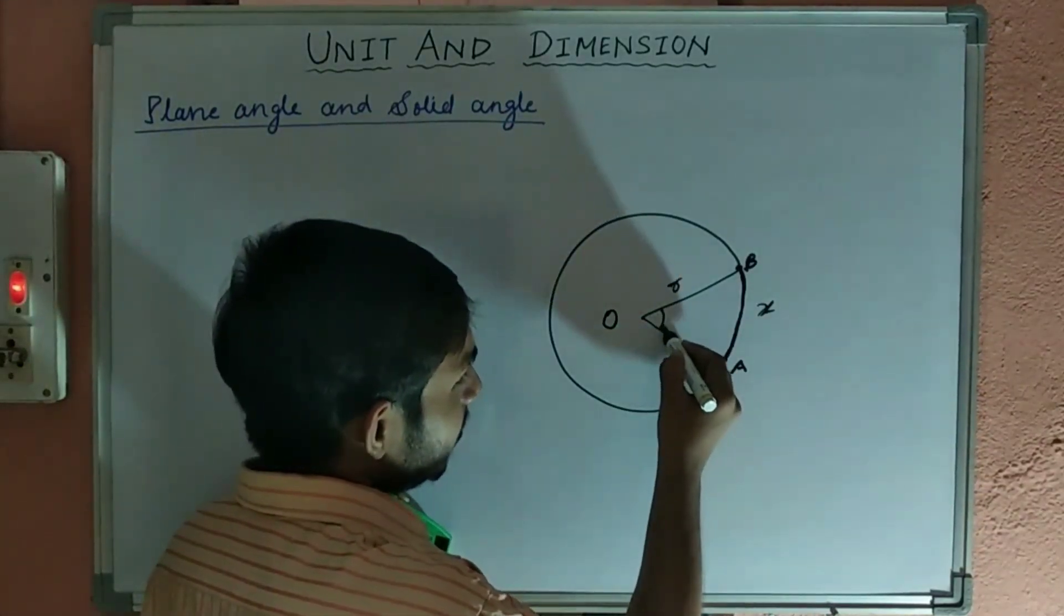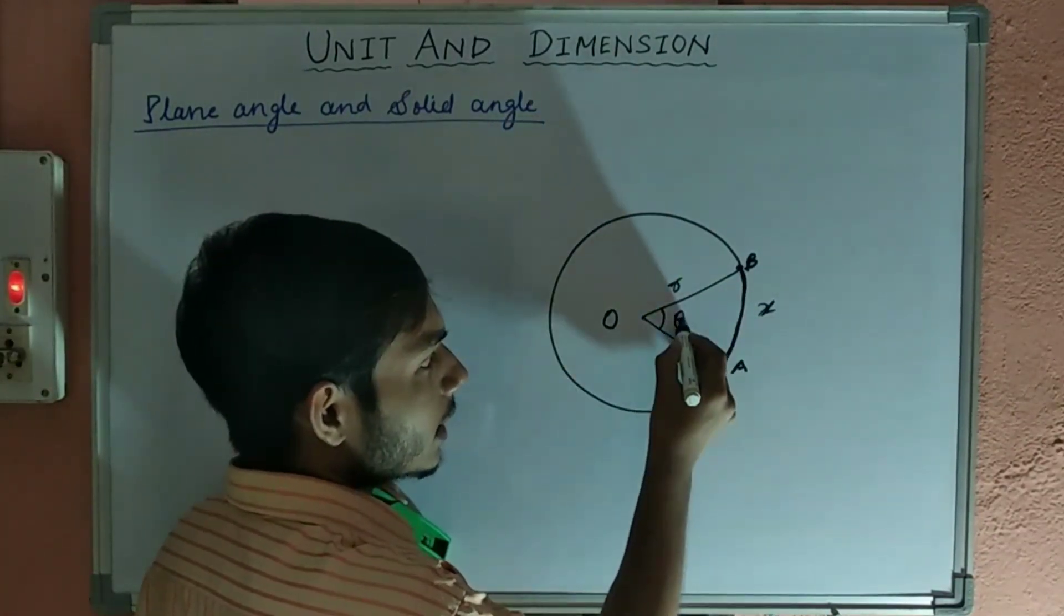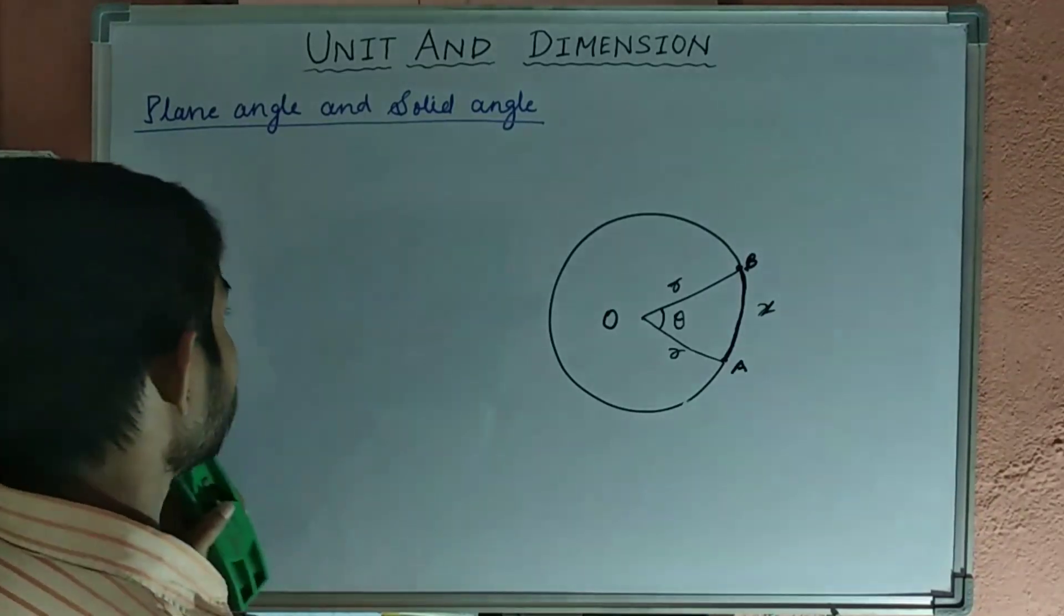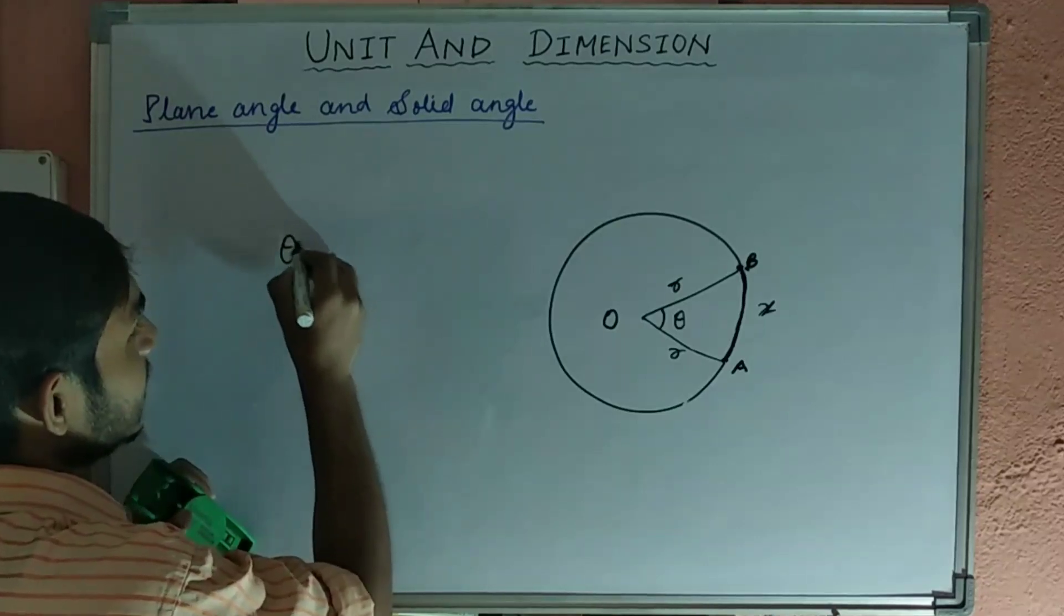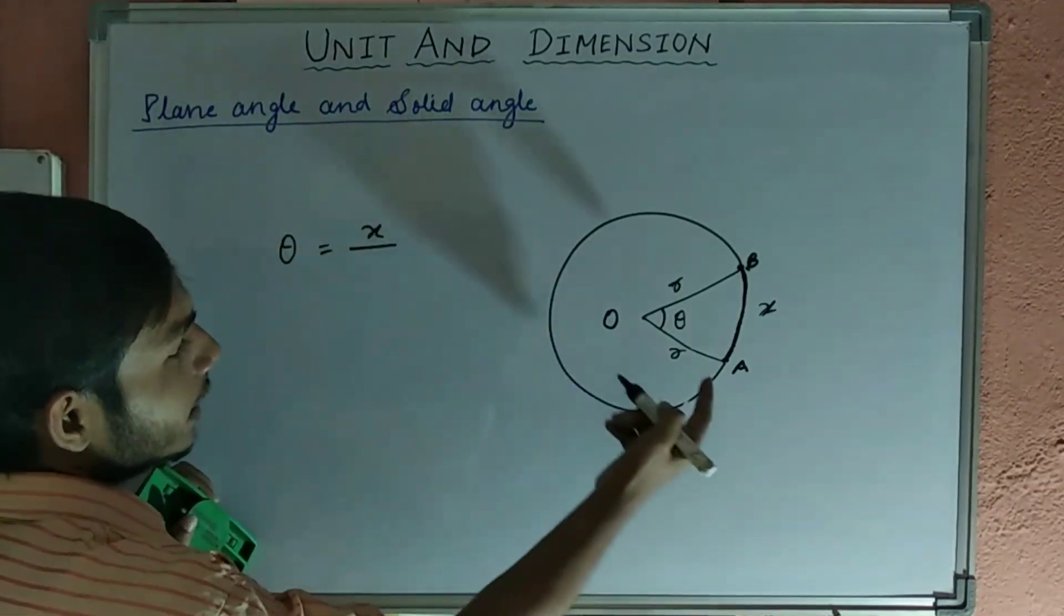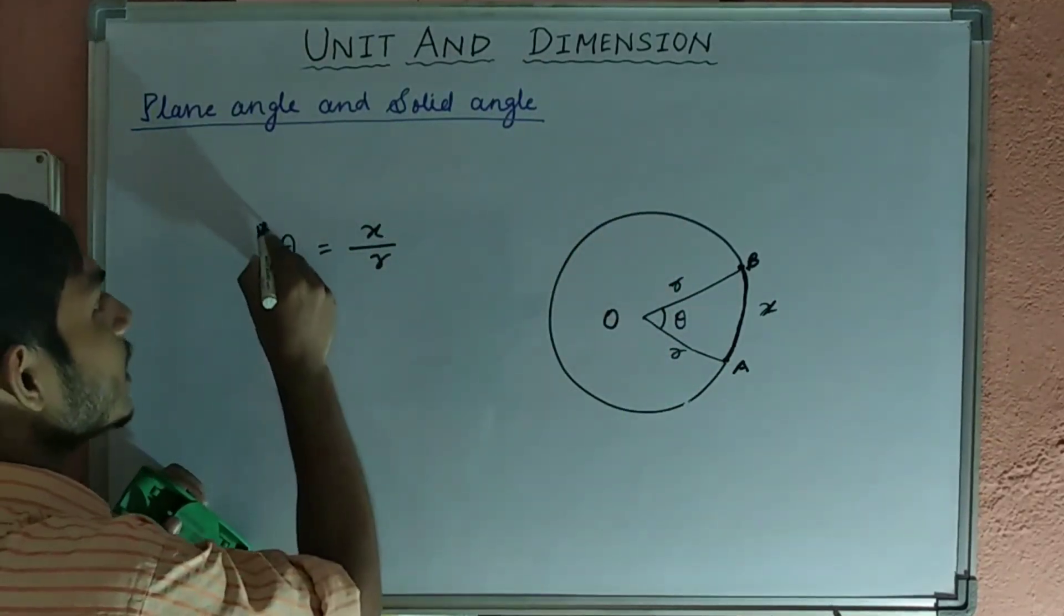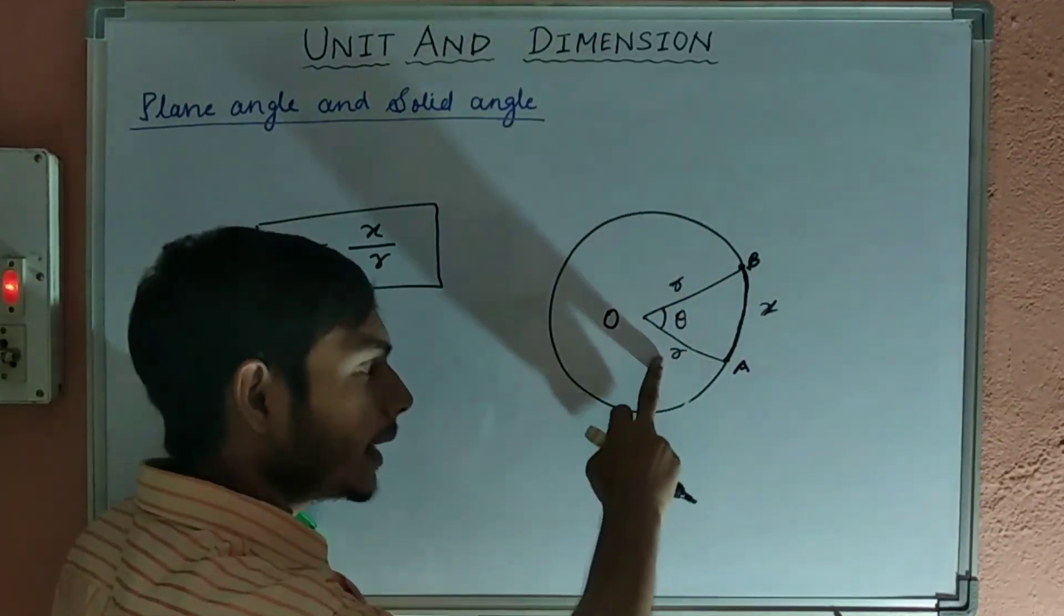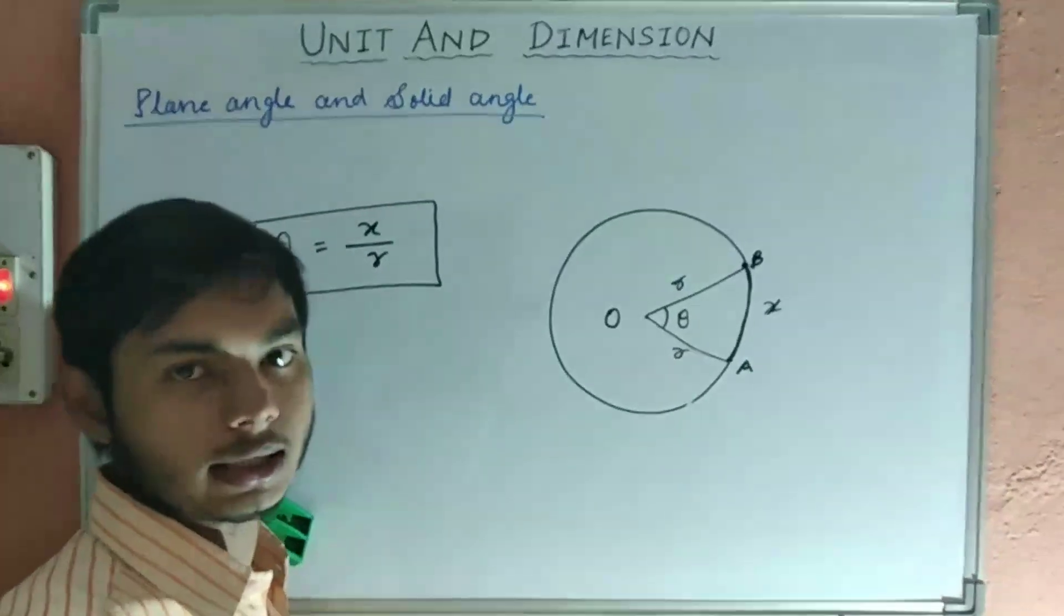Now, some angle is made by this arc at the center. Let us suppose it is theta. From mathematical expression we can write theta, that is angle, equal to arc that is x divided by radius that is R. This is the relation between the arc length, radius, and the angle subtended by the arc at the center of the circle.